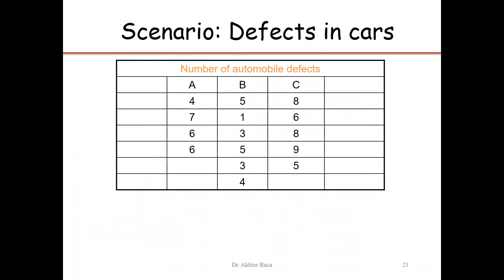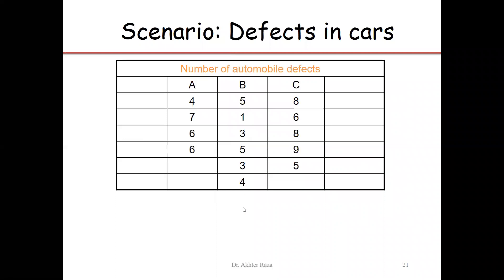We are going to complete the ANOVA technique on this scenario. Looking at the sample data: the sample size from model A is four, the sample size from model B is six, and the sample size from model C is five. It is a very small problem, but we want to compare the average number of defects in the three models of car.